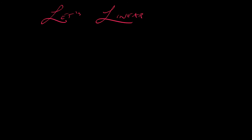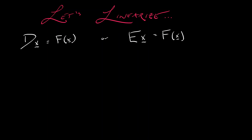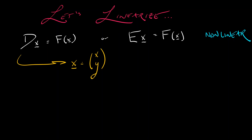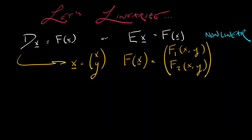Let's say that we have a nonlinear system of the form dx equals f of x, or e x equals f of x, in continuous or discrete time. Here, x with an underline means the planar vector variables x and y. And when we write the right-hand side f of x, that capital F of x splits into two components: the first output f1 and the second output f2. The derivative of this right-hand side is going to be the key.